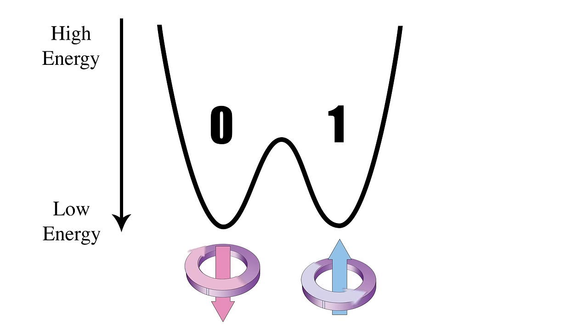Here the low point of the left valley corresponds to the zero state and the low point on the right valley corresponds to the one state.